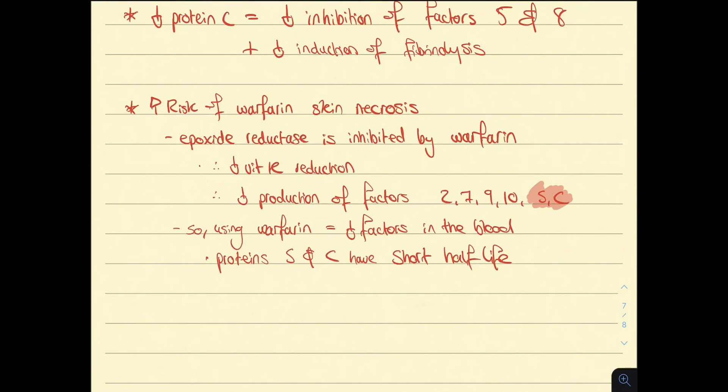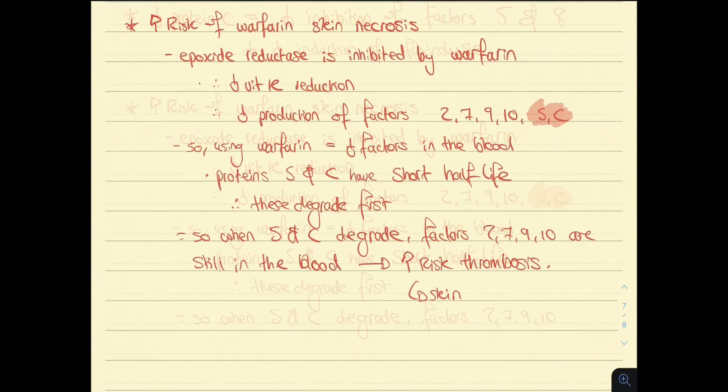Now, proteins S and C have a shorter half-life than the factors and thus degrade first. Therefore, warfarin paradoxically causes a hypercoagulable state, as proteins 2, 7, 9 and 10 are at an increased ratio compared to anticoagulant proteins S and C. This increases the risk of thrombosis, which usually manifests as skin necrosis.